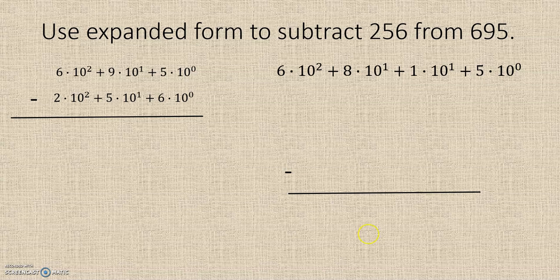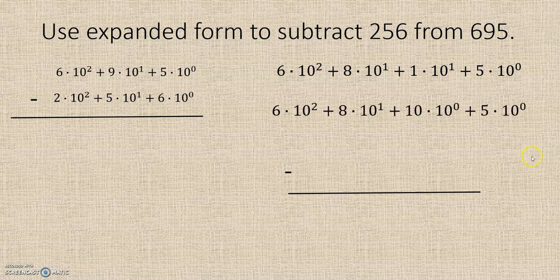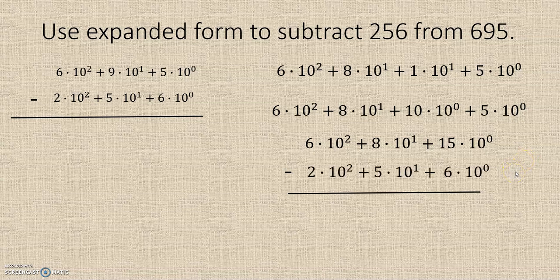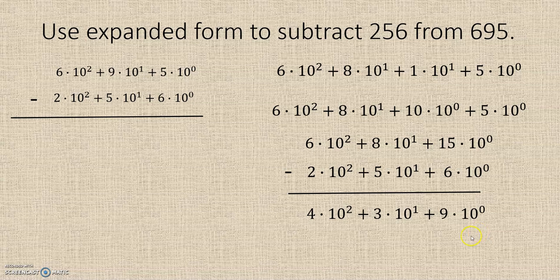That 1 times 10 to the 1st we're going to rewrite as 10 and add that to our 10 to the 0 column, giving us 6 times 10 to the 2nd, plus 8 times 10 to the 1st, plus 15 times 10 to the 0. Subtracting each term gives us 4 times 10 to the 2nd, plus 4 times 10 to the 1st, plus 9 times 10 to the 0. The answer is 439.